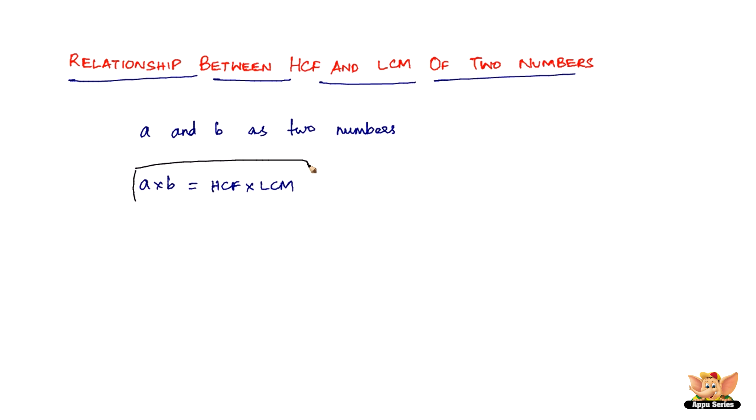Now from this relationship we can use this in different ways. So you can find LCM of two numbers when the numbers and their HCF are given. So that will be a times b divided by HCF.